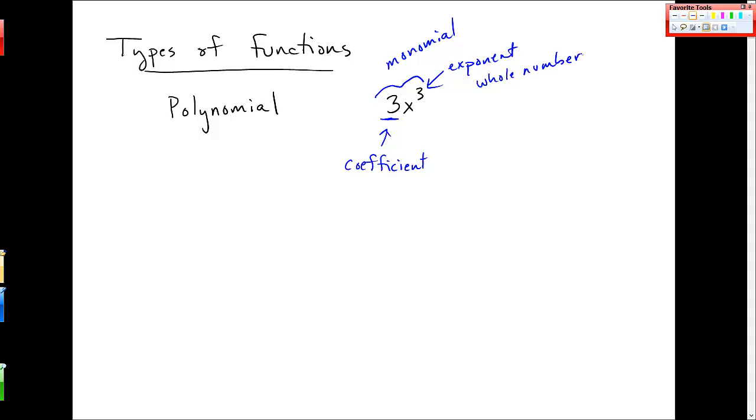So it can be 0, 1, 2, but like a counting number. If it's a fraction, if it's a negative number, if it's anything other than a whole number, this is not a monomial. And so we call things polynomials when we add monomials or subtract monomials from each other.